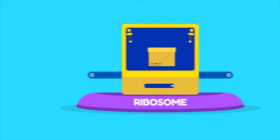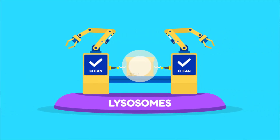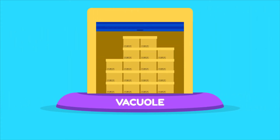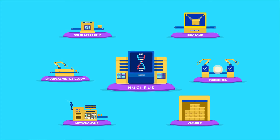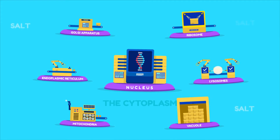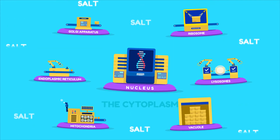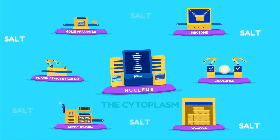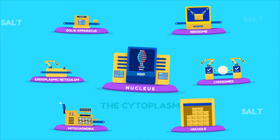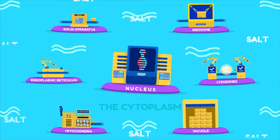Ribosomes help in protein synthesis. Lysosomes destroy the foreign objects. The vacuole acts as a storage system of a cell. All these are termed organelles. All these organelles float in the cytoplasm and substances like salts may be dissolved in it. This gives it a jelly-like appearance.